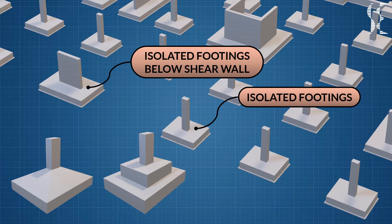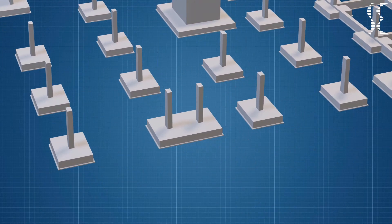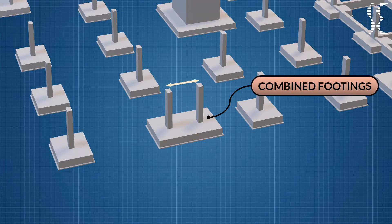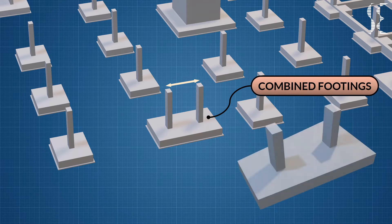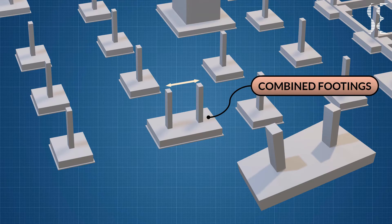Next comes combined footings which accommodate more than one column. When the spacing of adjacent columns is so close that the separated isolated footings are not possible due to overlapping areas of foundations or inadequate clear space between two areas of the footings, combined footings are provided. Such footings are either rectangular or trapezoidal in plan with or without beam joining the two columns.